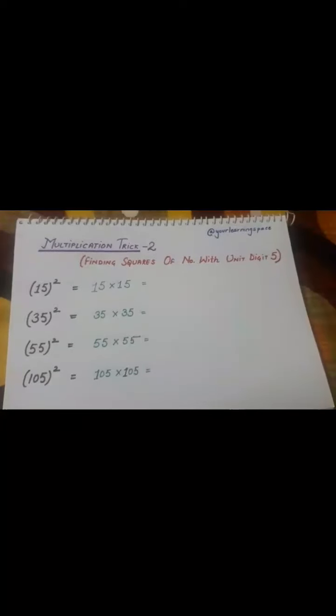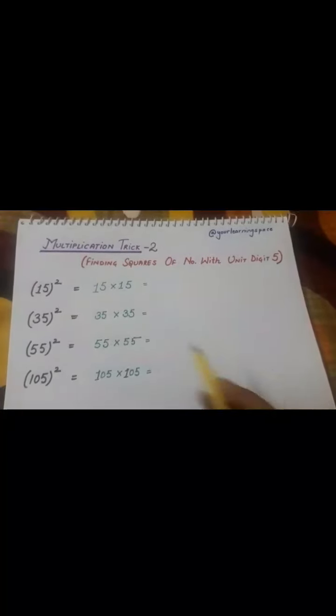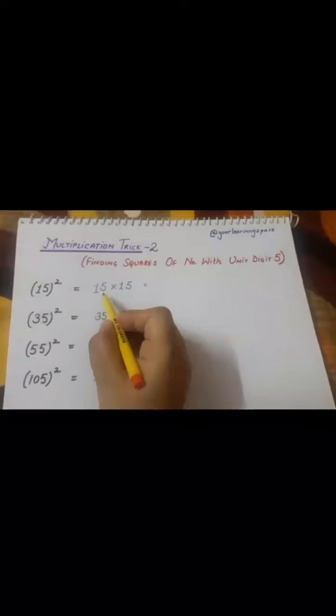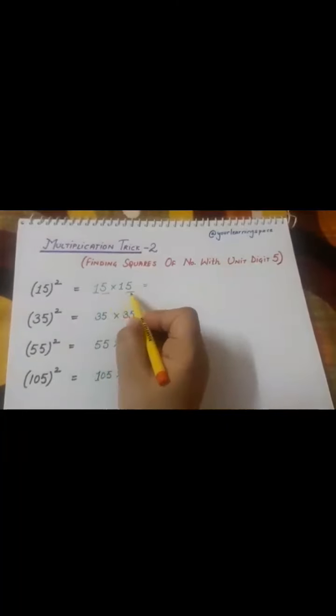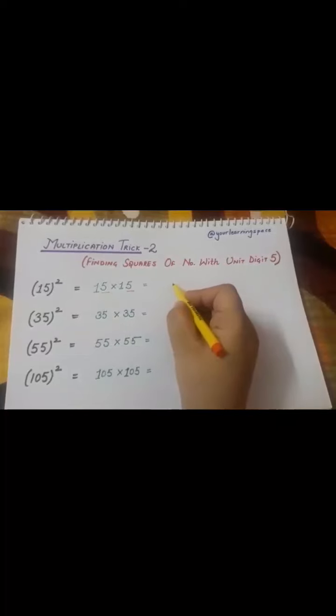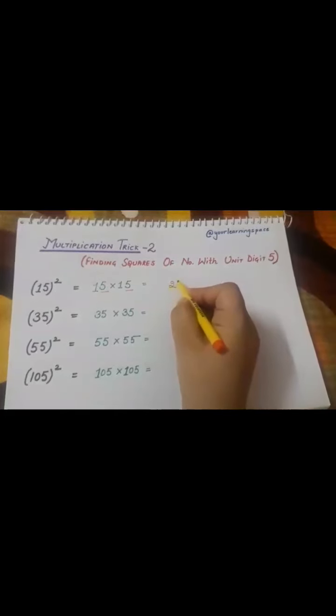To find the squares of such a number, the first thing that we have to do is see the unit digit. Here, both unit digits are five, so what we'll be doing is writing 25 over here. Once we are done with this...